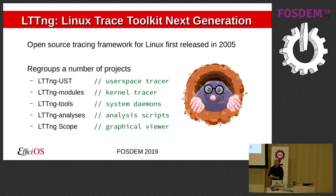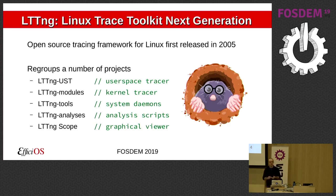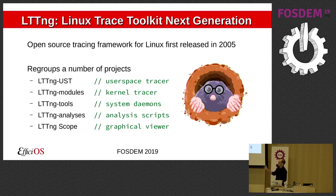LTTNG started in 2005. At this point it is more of an umbrella project. We have a user space tracer, kernel space tracer, the system daemons that I maintain to control both tracers and control the data extraction paths. The LTTNG analysis project is a set of scripts to work with traces. And LTTNG scope is a graphical viewer.